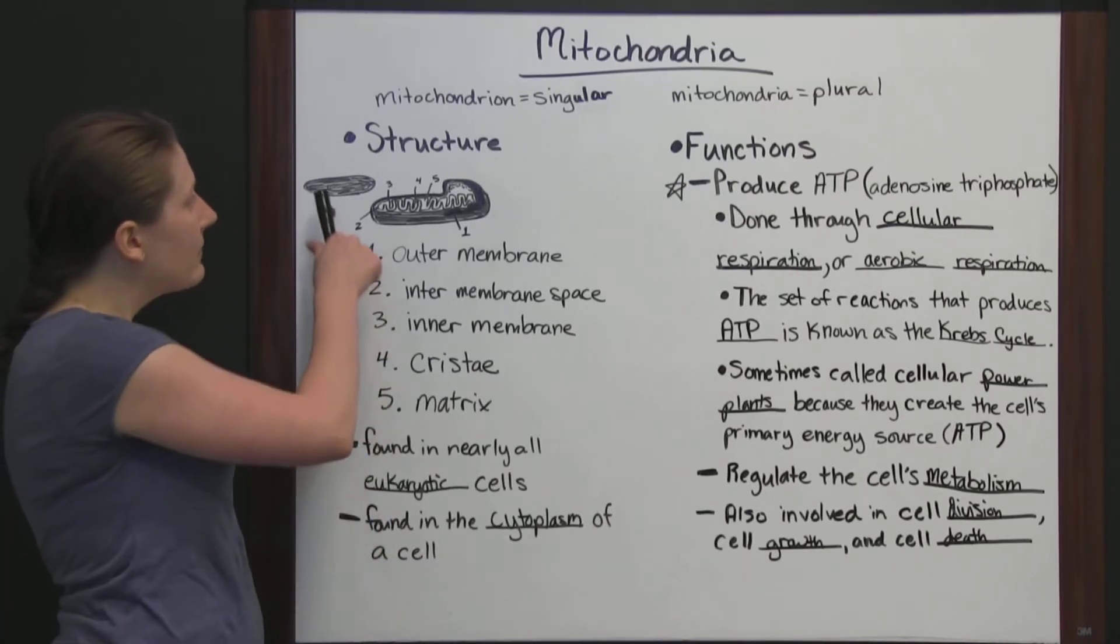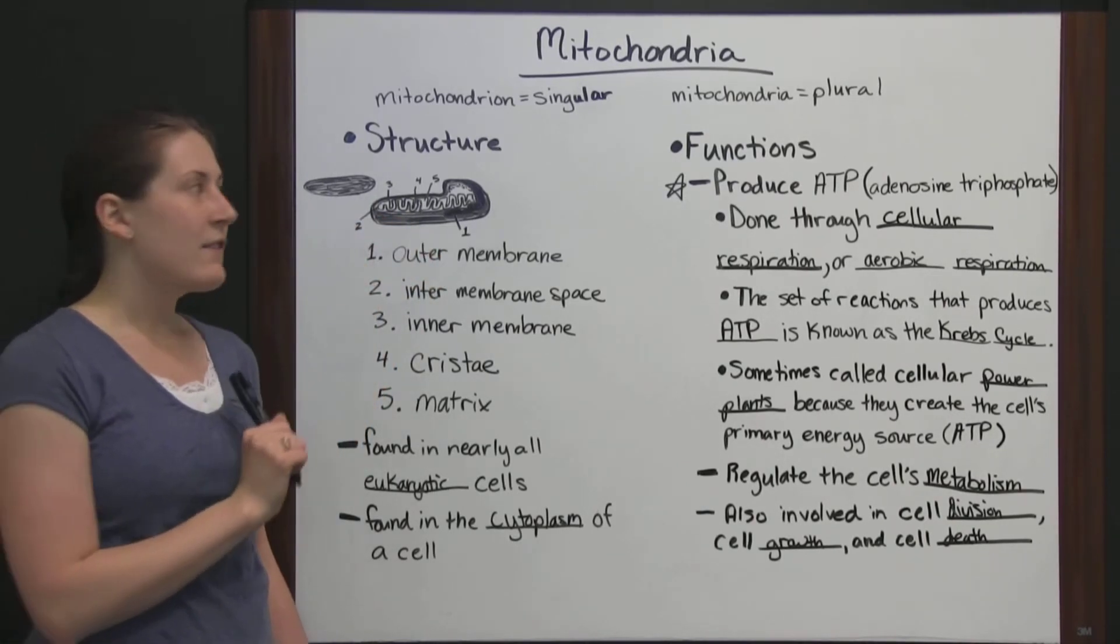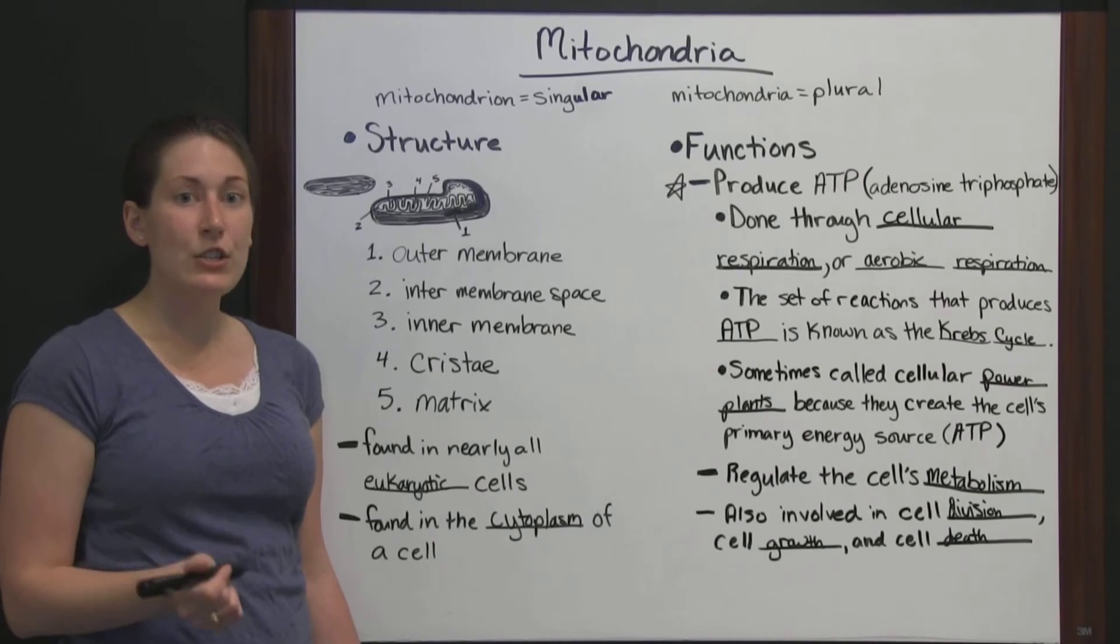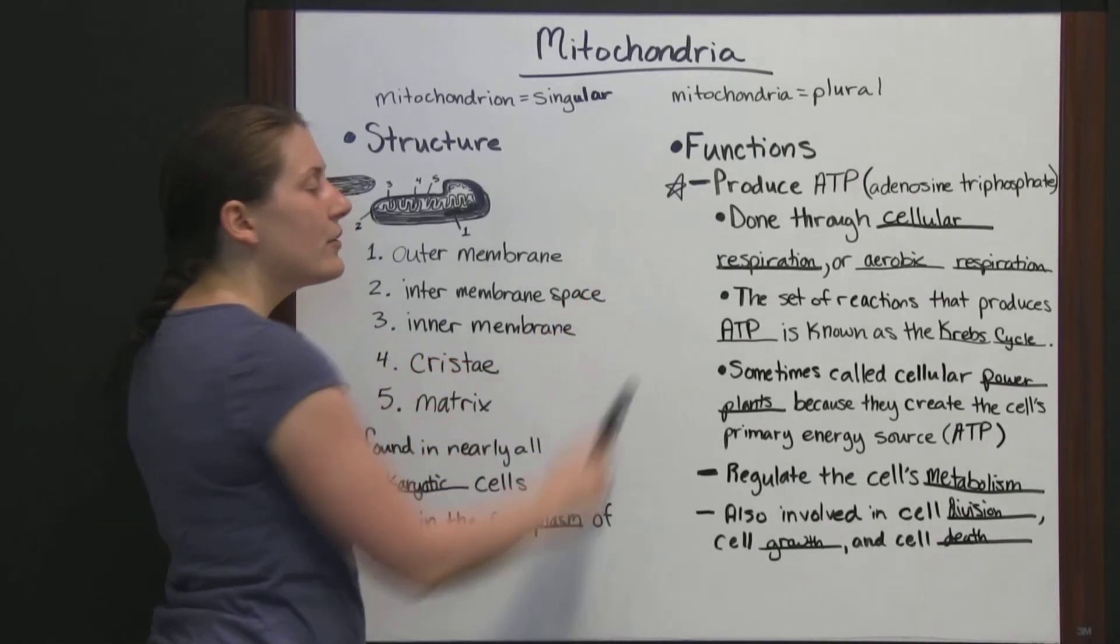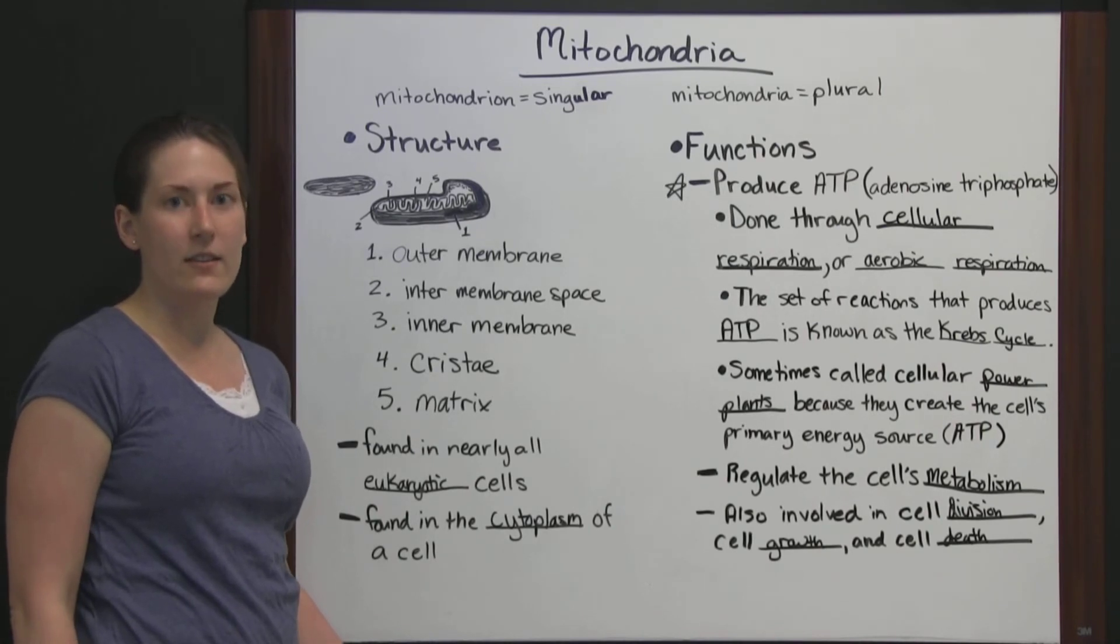So, just remember, if you're looking at a cell diagram, you're looking for that little jelly bean shape, and if you're thinking about what does a mitochondria do, think about producing energy, producing ATP. The mitochondria is your power plant of the cell.